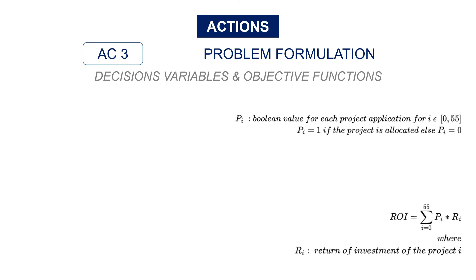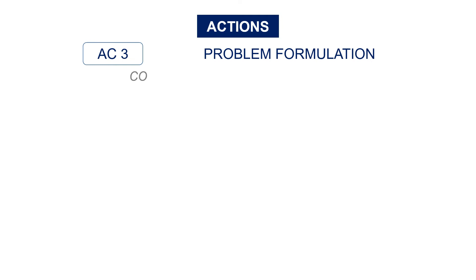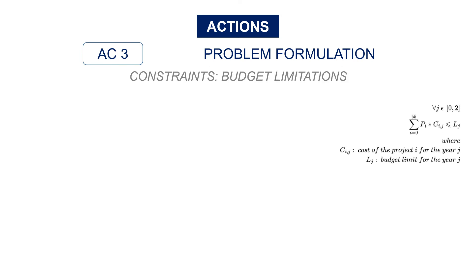You start by formulating the decision variables and the objective function. The decision variables are boolean values for each project — one if you allocate your budget to this project and zero if not. The objective function is the total return on investment, which is the sum of the boolean value for each project multiplied by the return on investment of each project. The first constraint is the budget limitation: for the next three years, you have a limited budget, so the sum of the costs of all projects must be lower than the budget per year.